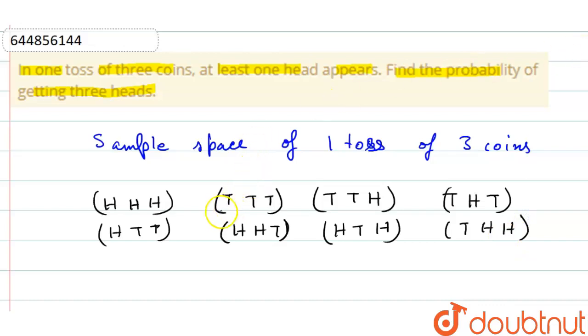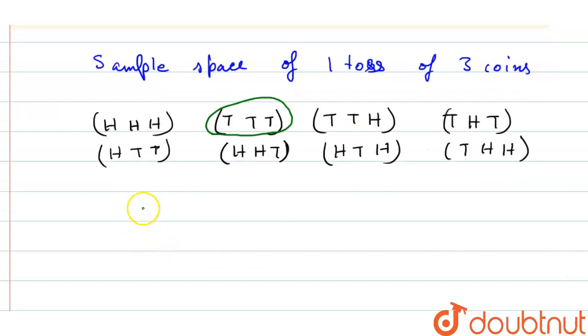Here, tail tail tail is not possible. So total number of sample space will be left, that is seven. We have seven where TTT, that is tail tail tail, is not possible because there is no head.